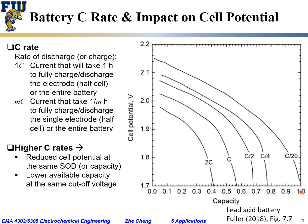On the other hand, for the same cutoff voltage — let's say we start with the open circuit voltage and then discharge the battery to a certain cutoff voltage below which you would not go in order to protect your battery — for the same cutoff voltage of, say, 1.7 volts for this lead-acid battery, we see that as the C-rate increases, the available capacity decreases from a relative 100% down to roughly only 40%, which is a significant drop in capacity.